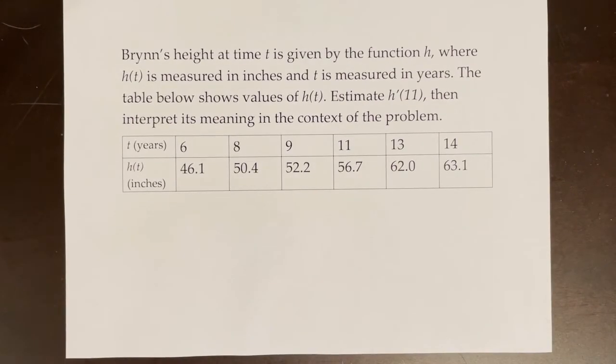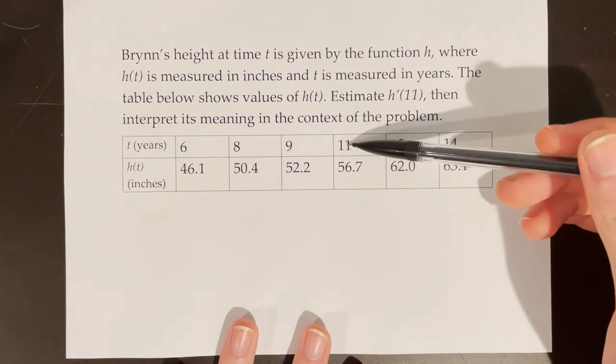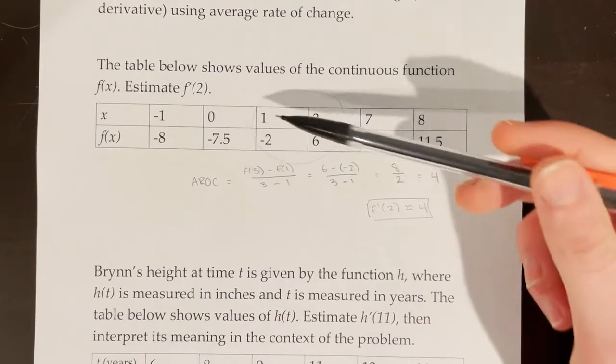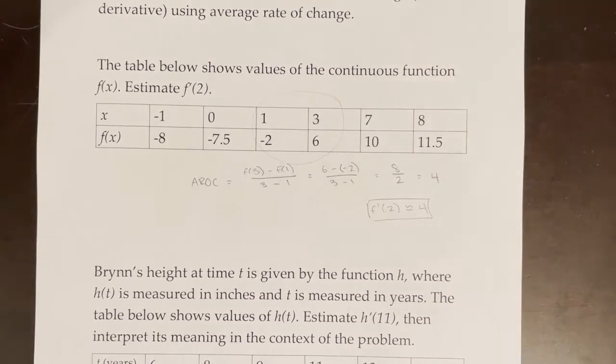Brynn's height at time t is given by the function h, where h of t is measured in inches and t is measured in years. The table below shows values of h of t. Estimate h prime of 11, then interpret its meaning in the context of the problem. So in this case, I'm actually given what h of 11 is. 11 is one of my actual points. Up here, when we were trying to find f prime of 2, 2 was not an actual point.